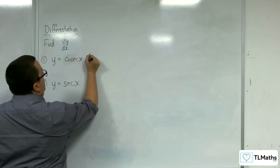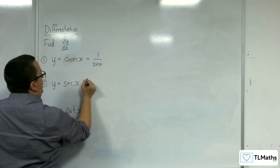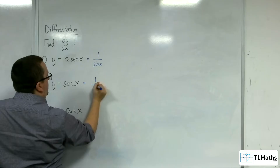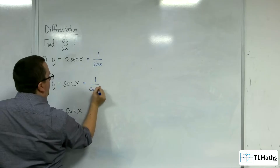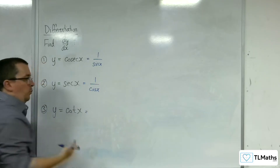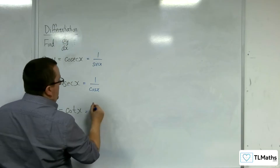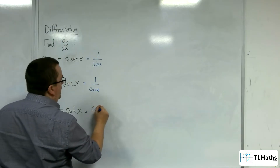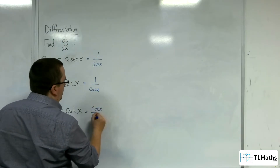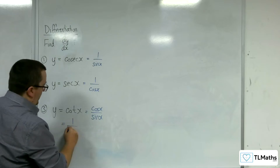Cosec is, of course, 1 over sine x. Sec is 1 over cosine x. And cot is 1 over tan, which is the same as cosine over sine. I'll just pop it as 1 over tan down here.